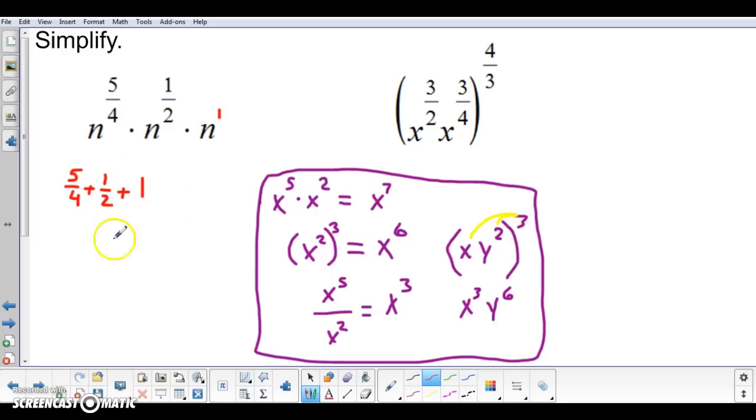So that means we're going to need to take five-fourths plus one-half plus one. Now, if you remember adding fractions, in order to add fractions, you have to have common denominators. In this case, your common denominator would be a four, because that's the least common multiple of the denominators. To change one-half into a number of fourths, I would multiply by two over two, and that would become two-fourths. And to change one into a number of fourths, I'd multiply it by four over four, which is four-fourths.